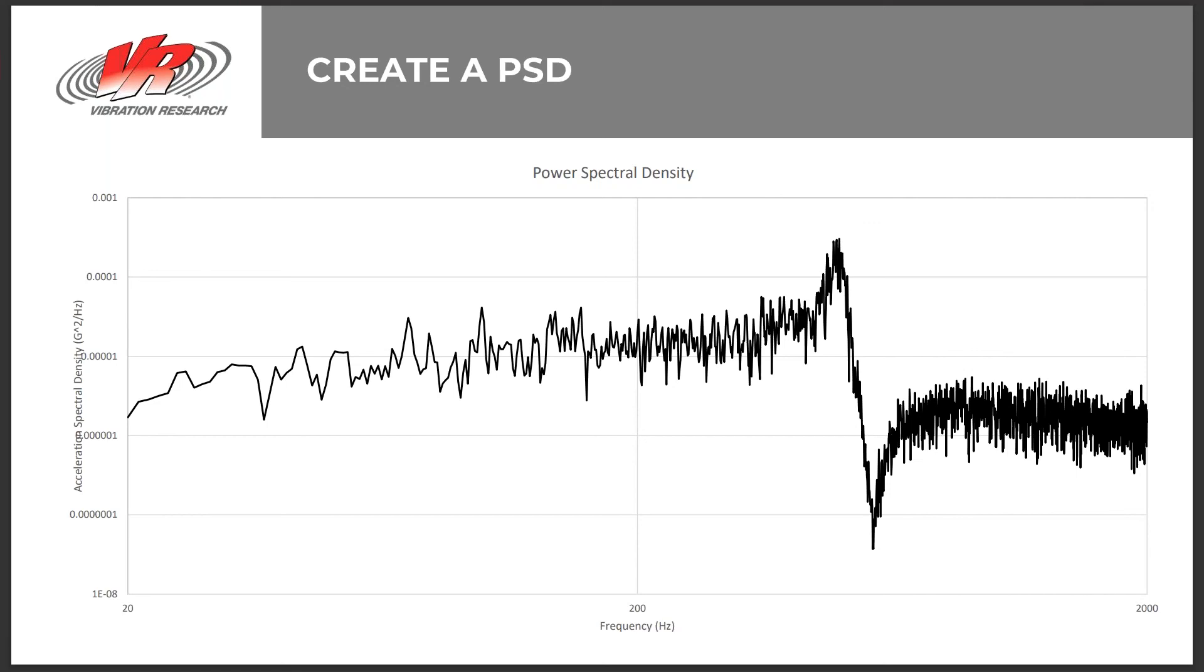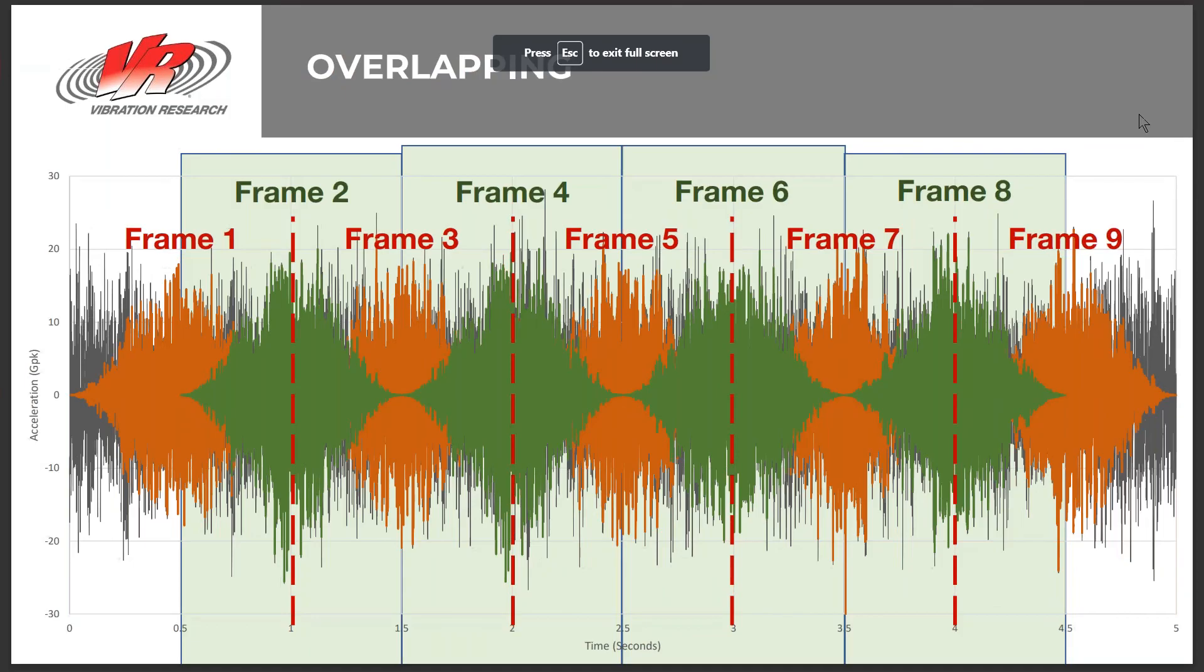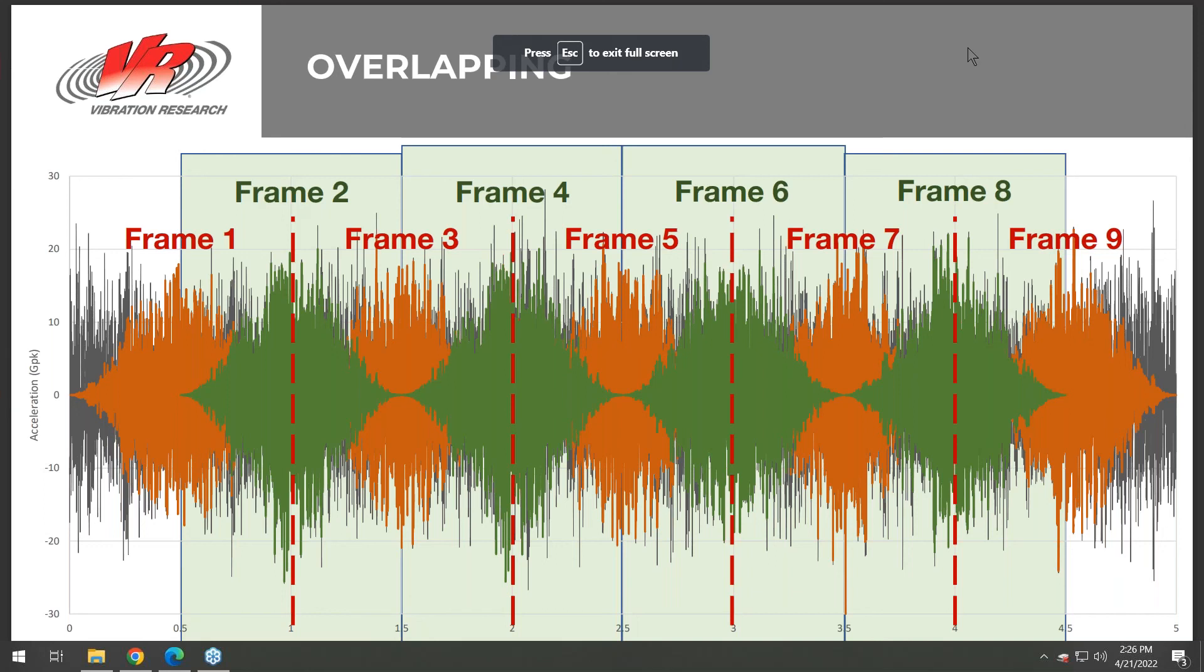The PSD shows the average energy at a single frequency over a period of time. This period of time is determined by an analysis parameter called degrees of freedom. The higher the degrees of freedom, the more frames of data that will be averaged together. More degrees of freedom means more frames of data are being averaged together, which creates a longer period of time to acquire.